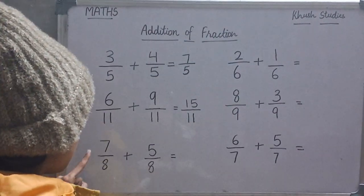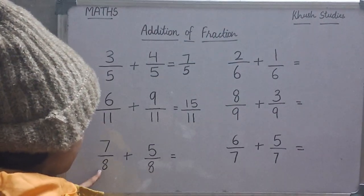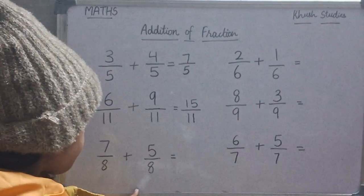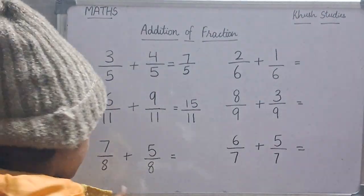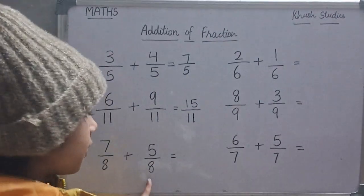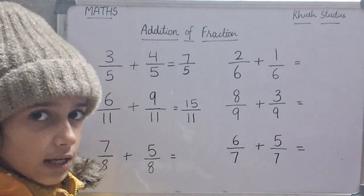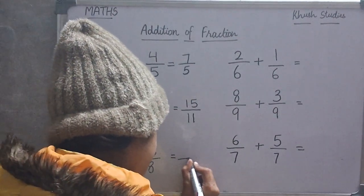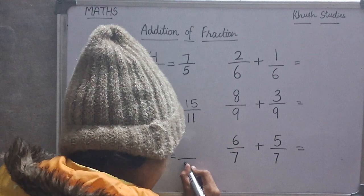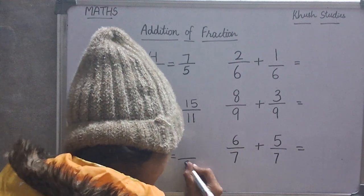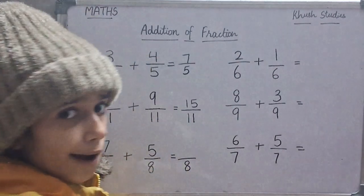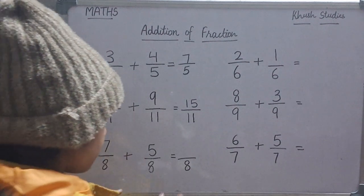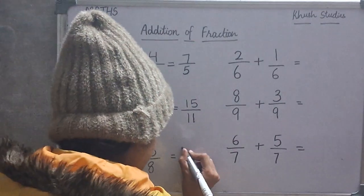Now, we will add 7 upon 8 with 5 upon 8. In both the fractions, denominators are same. So, in the answer, same. Now, we will add 7 plus 5, which is 12, so the answer is 12 upon 8.